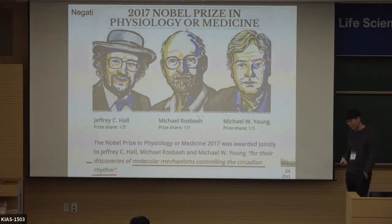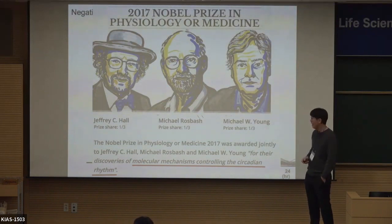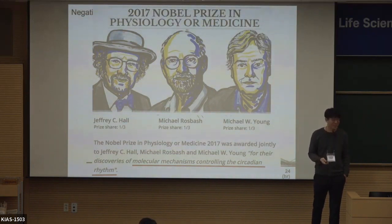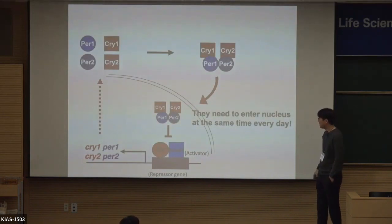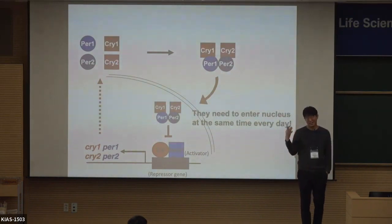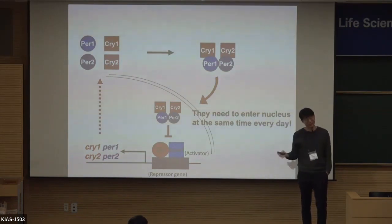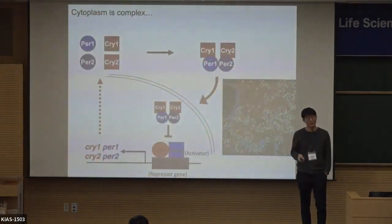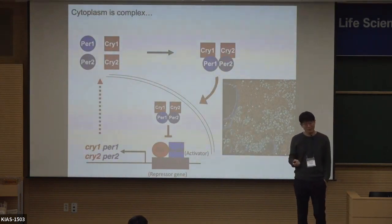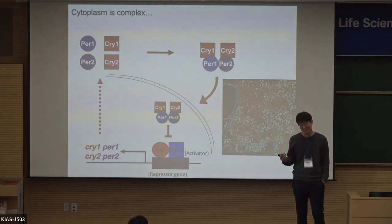This is a really well-characterized mechanism in biology, but when I read it, I felt it was too ideal. To generate this 24-hour rhythm, the period protein needs to enter the nucleus at the same time every day — after 12 hours they enter the nucleus and shut down transcription. But a cell is not empty space; it's a super complex space. How do thousands of molecules travel this complex environment and enter the nucleus at the same time every day? It's not easy.